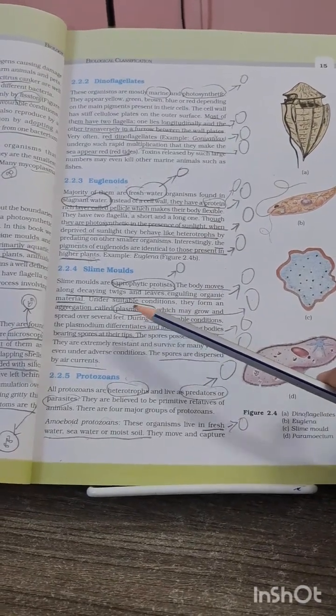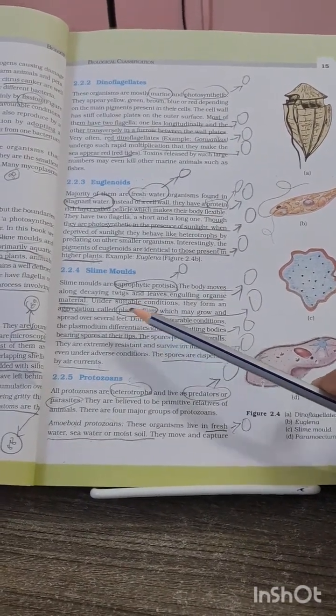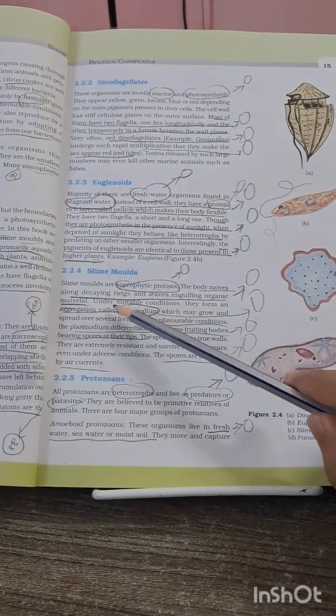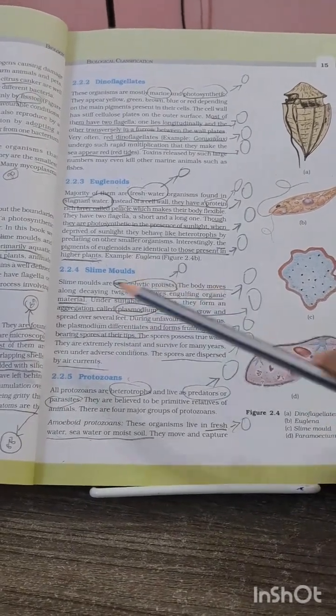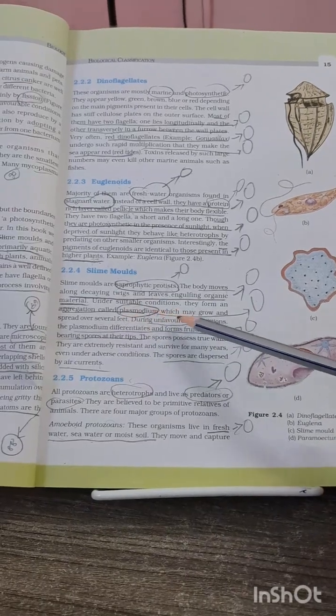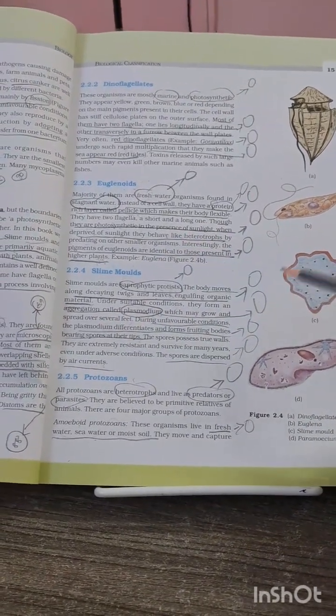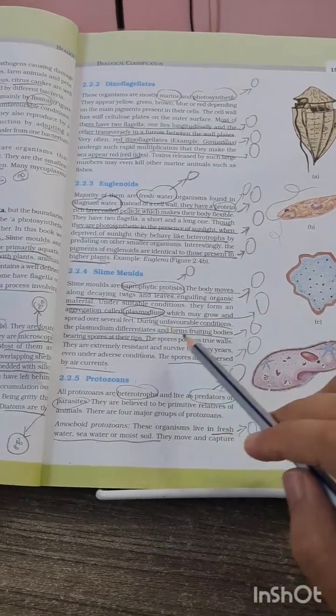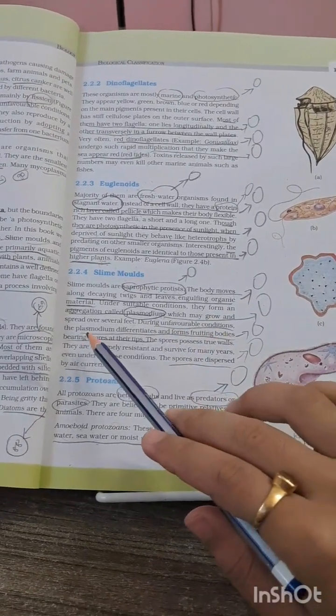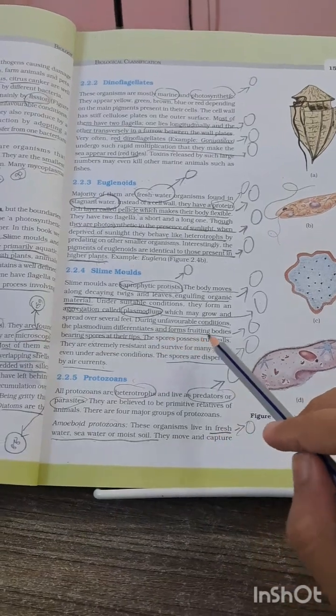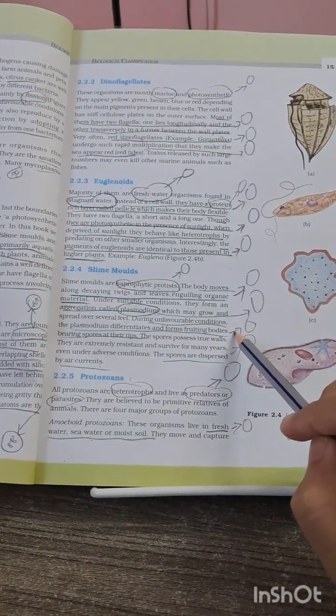Now plasmodium has been asked many times. Under suitable conditions, slime molds form an aggregation called plasmodium which may grow and spread over several feet. This MCQ has been asked many times. And during unfavorable conditions, plasmodium differentiates and forms fruiting bodies.